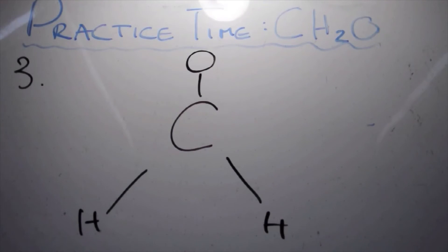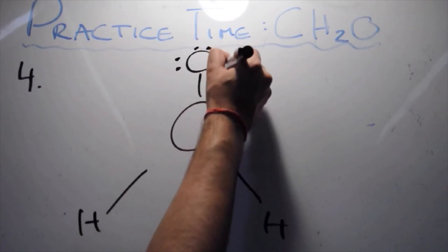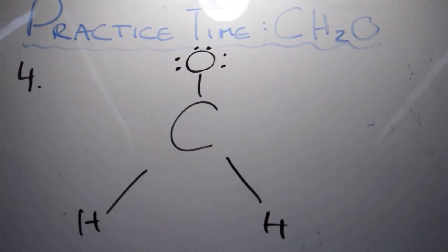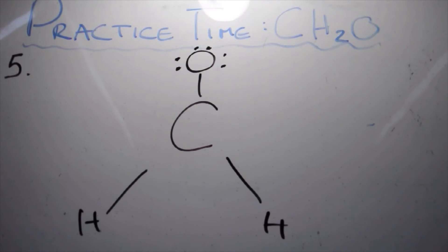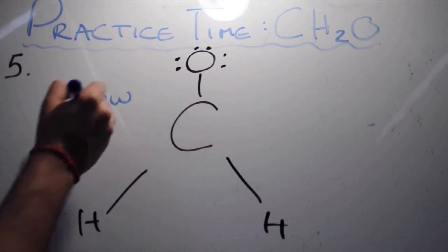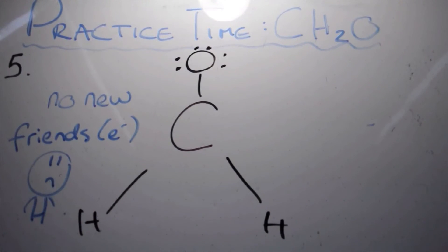In the fourth step, we will complete the octets of the attached atoms. To do this, we will add 6 electrons to the oxygen atom to complete its octet of 8 electrons, and none to the hydrogen atoms, as it has a full octet from the 2 electrons in the bond with carbon. In the fifth step, we will have used all the 12 electrons at the moment, thus we cannot place any more electrons around the central atom, carbon, to complete its octet.